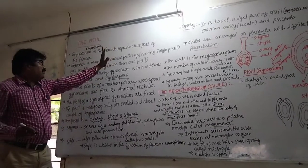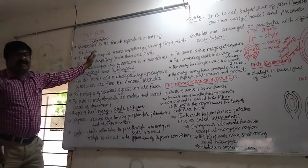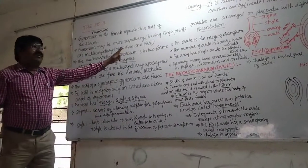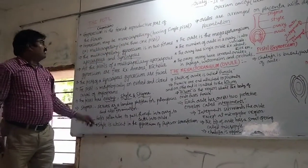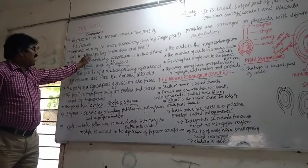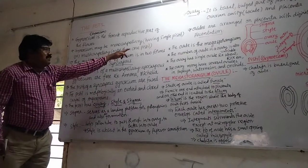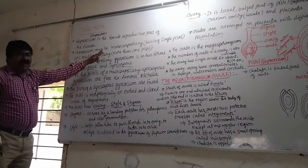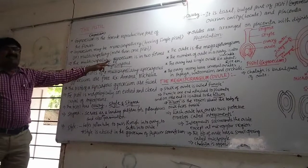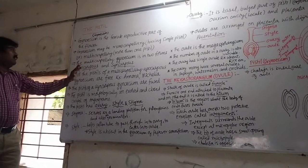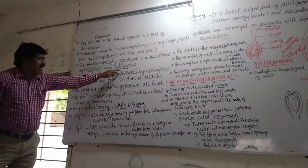The reproductive part of the flower. The gynesium may be monocarpillary, having single pistil, and more than one is multicarpillary. Multicarpillary gynesium is two types, two forms: apocarpus and syncarpus.